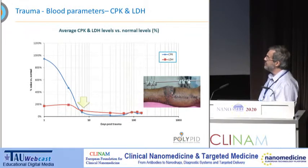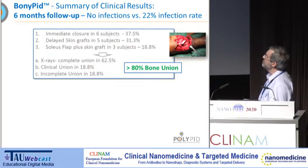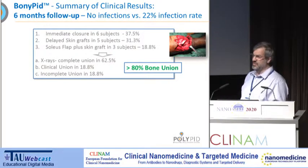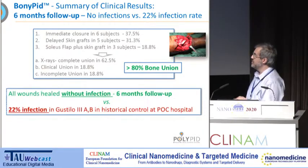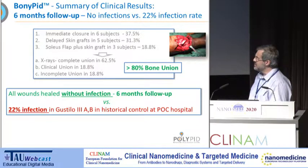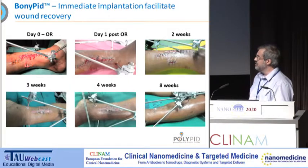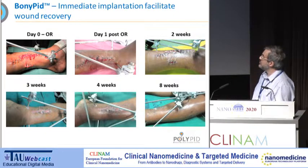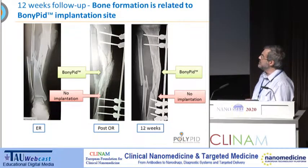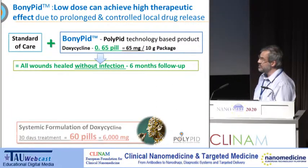Stress factors like CPK showed a very sharp drop after one week. For the results: over 80% after six months were completely healed from the aspect of bone union. But more importantly, there was no infection in any of the patients. Whereas in the historical control group at this hospital, 22% infection rate was seen in Gustilo 3A and 3B cases. You can see how fast people recovered — day one, two weeks, three weeks, four weeks, and basically that's it. The Bonipid insertion is associated with bone recovery.